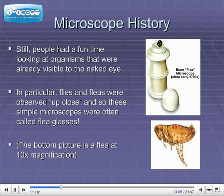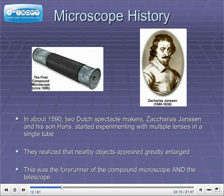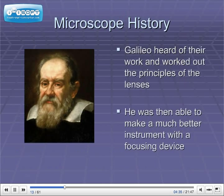So if you look at these pictures, the bottom picture is of a flea at 10x magnification. In about 1590, two Dutch spectacle makers, Zacharias Jansen and his son Hans, started experimenting with multiple lenses in a single tube. They realized that nearby objects appeared greatly enlarged. This was the forerunner of the compound microscope and the telescope. Galileo heard of their work and worked out the principles of the lenses. He was then able to make a much better instrument with a focusing device, working out the math to figure out how to get a better magnification.